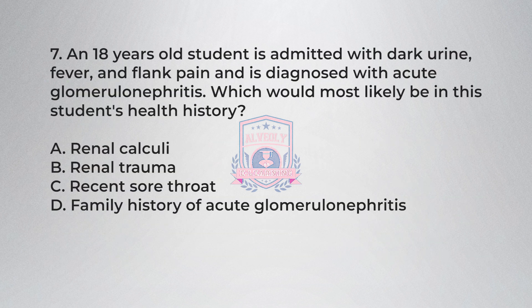Question 7: An 18-year-old student is admitted with dark urine, fever, and flank pain and is diagnosed with acute glomerulonephritis. Which would most likely be in this student's health history? A) Renal calculi, B) Renal trauma, C) Recent sore throat, D) Family history of acute glomerulonephritis.